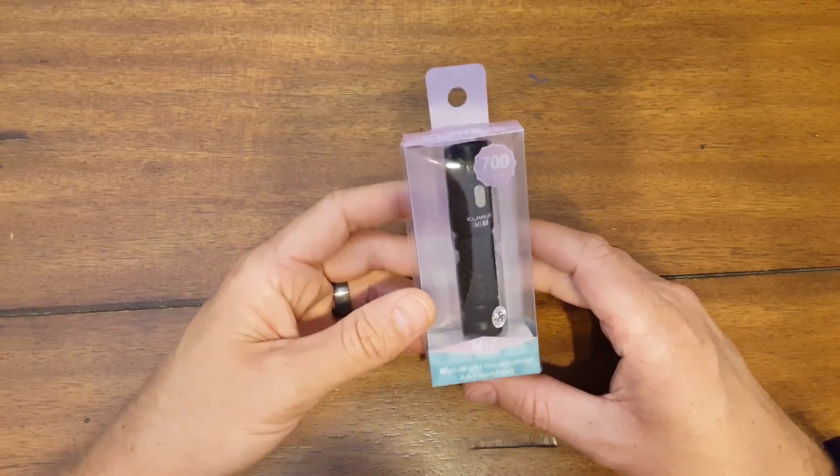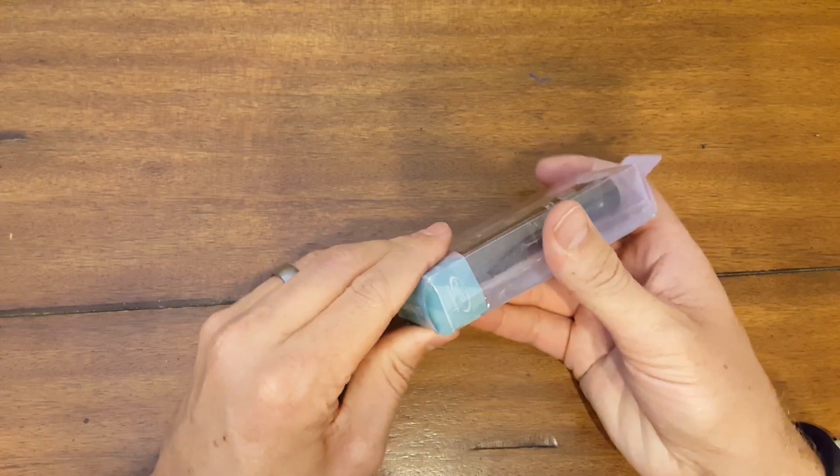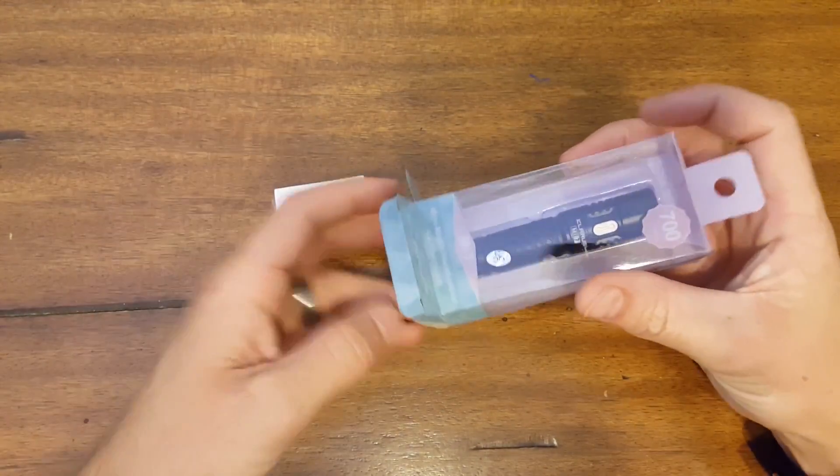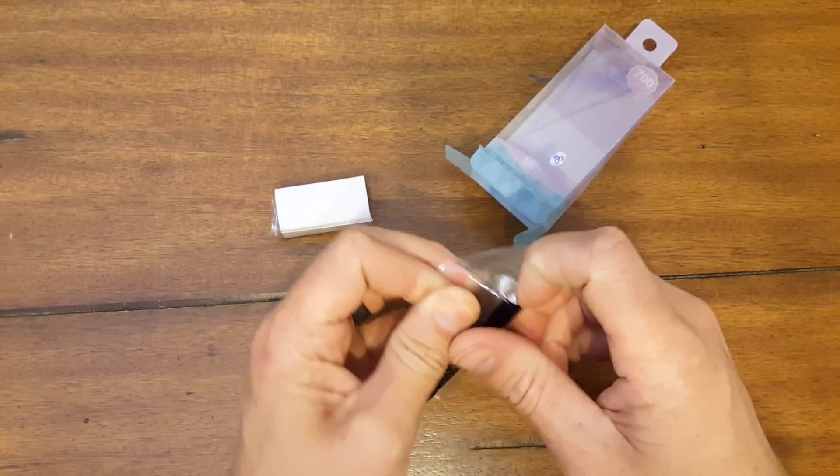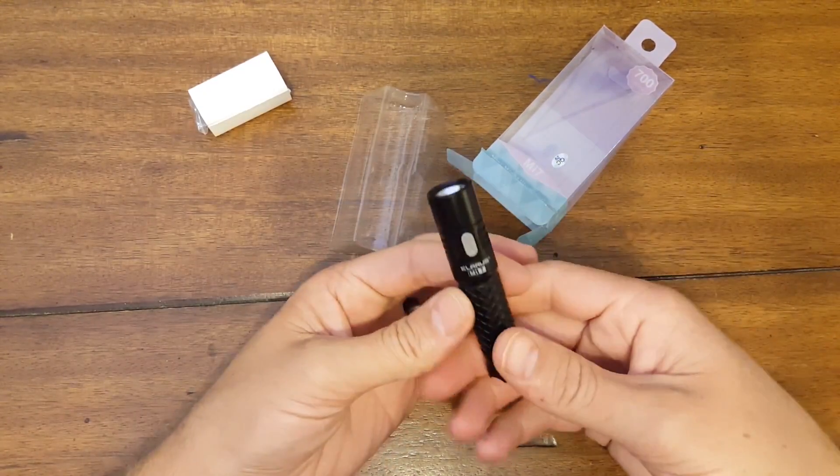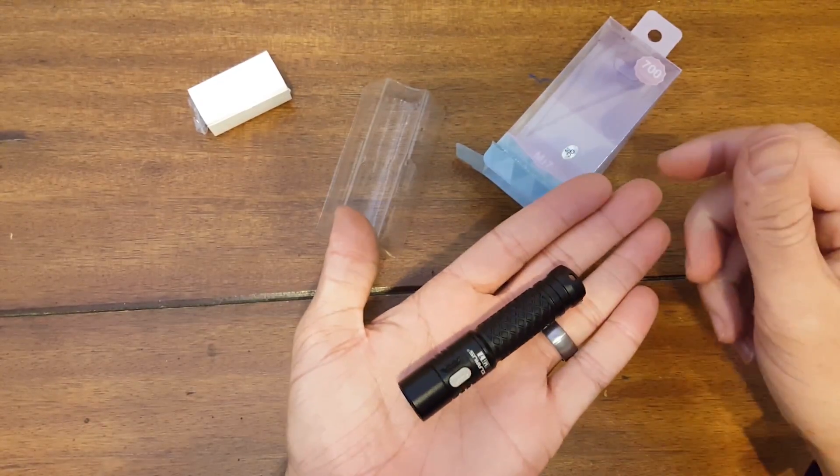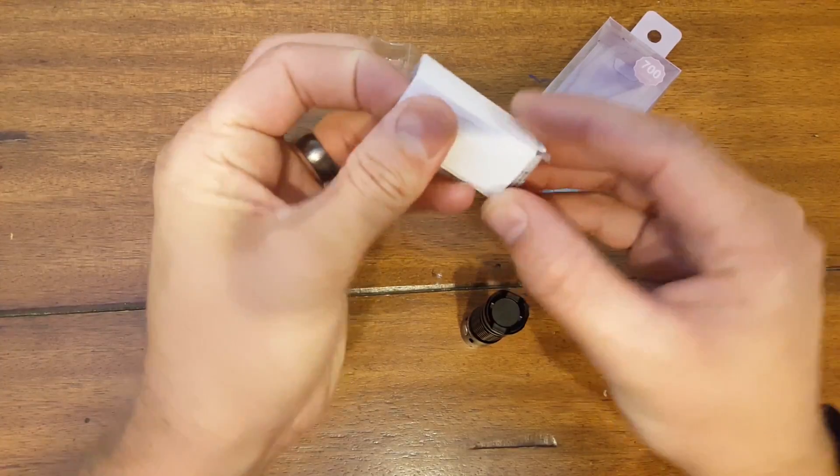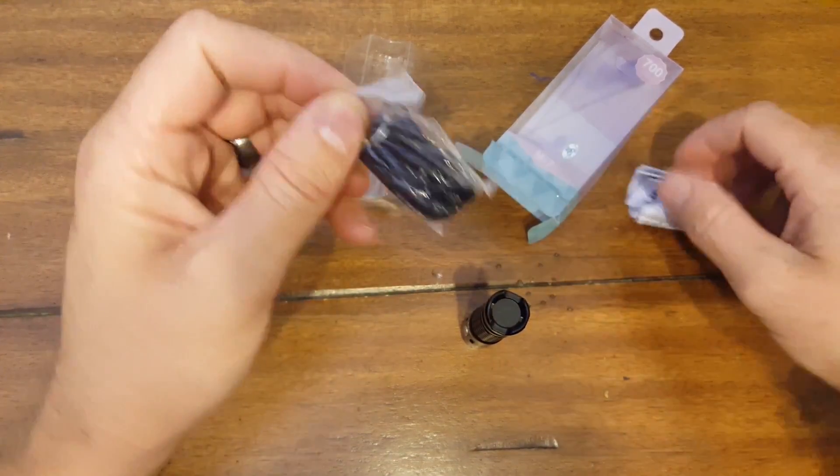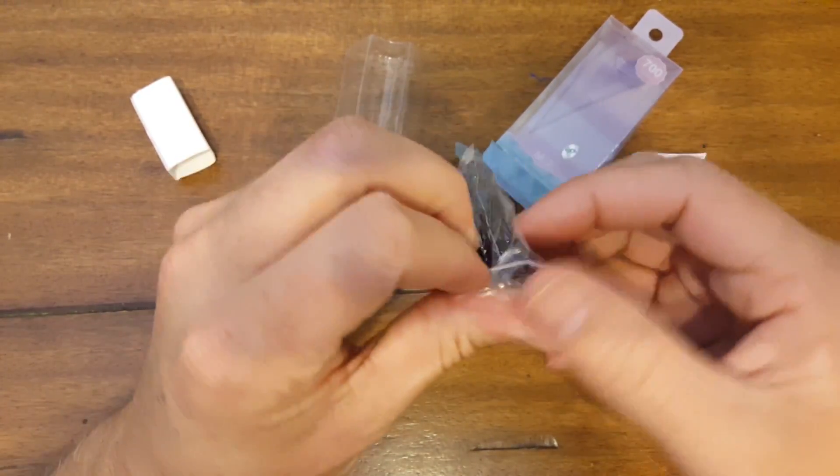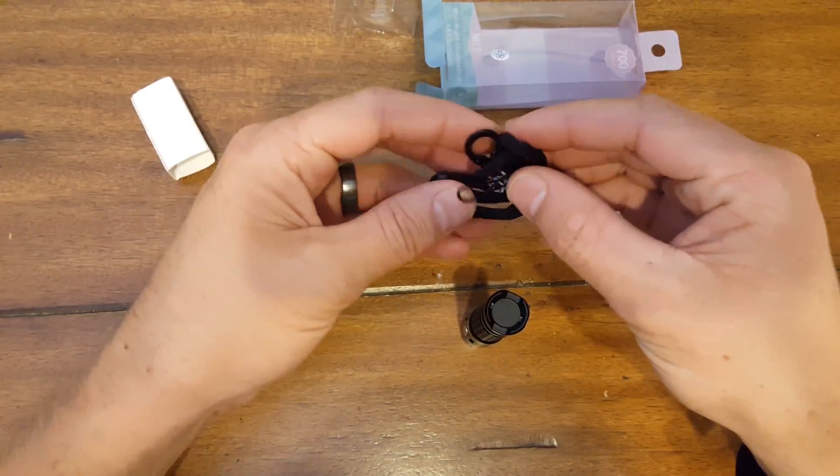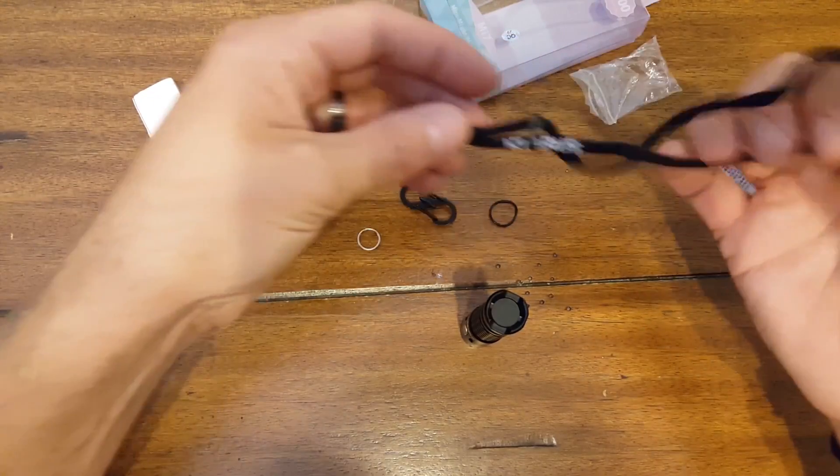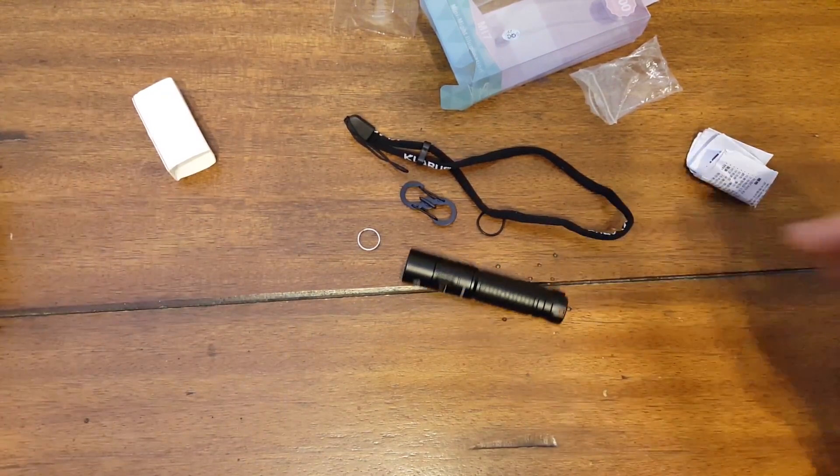This is the packaging that it comes in. Here's the light - it's really tiny, fits in the palm of your hand. It comes with the light and instruction manual, a lanyard, an O-ring, and a cool little S-clip. That's everything it comes with.